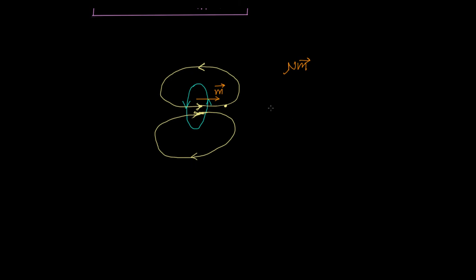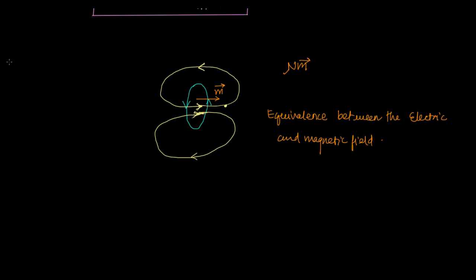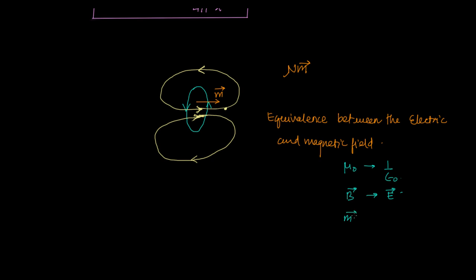So we see that there is an equivalence between the electric and the magnetic field. There are certain quantity equivalences, and if you are in the magnetic field you replace all mu naught by 1 upon epsilon naught and replace magnetic fields by electric fields — the formulas still hold. They are like the translational and rotational equivalences in mechanics.